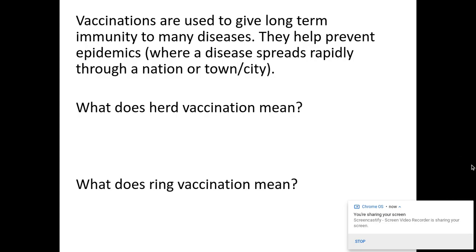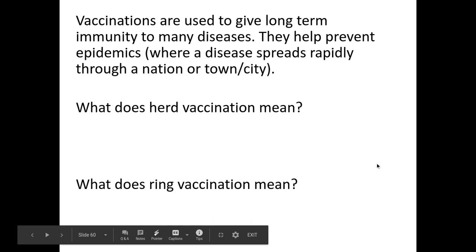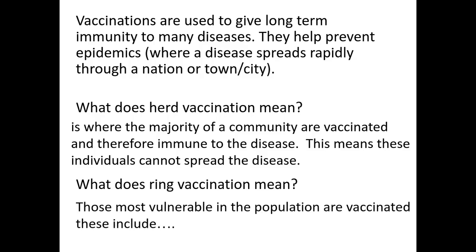There are two types of vaccination we need to know about. The first is herd vaccination, where the majority of the community will be vaccinated and therefore be immune to the disease. This means that individuals cannot spread the disease because they're immune to it. Ring vaccination is where the most vulnerable people within the population are vaccinated to help protect them.